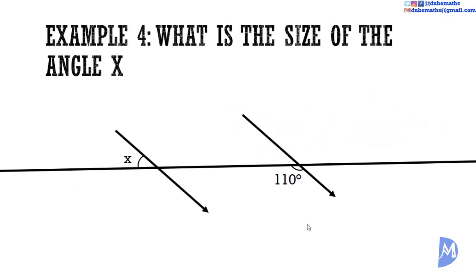Example 4: what is the size of angle X? Any of the rules would lead us to the answer. The sum of angles on a line equals 180 degrees, so this angle equals 180 minus 110, which is 70 degrees. Combining that with corresponding angles being equal, angle X is equal to 70 degrees. Alternatively, using corresponding angles, we know this angle is 110 degrees, and 110 plus 70 gives 180. We could also use alternate angles: 110 gives this angle as 110, and 110 plus X equals 180, so X equals 70 degrees.